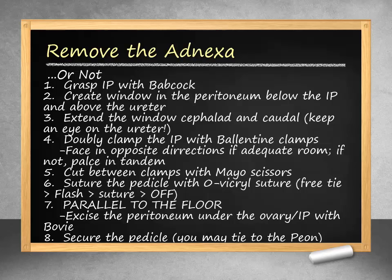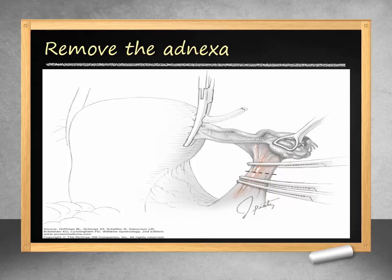Ballantyne clamps are then used to doubly clamp the IP through the window. Two Ballantyne clamps will be placed proximal to the IP with one clamp facing in the opposite direction close to the uterus. Mayo scissors are then used to cut between the clamps. The IP pedicle is then suture ligated, first with a free tie, followed by removal of the back clamp with flashing of the remaining clamp. Suture ligation is then performed with a transfixion suture and the clamp is removed while tying and securing the suture. We now have a freed IP. The peritoneum below the IP and ovary is then excised parallel to the floor with electrosurgery. This is performed on both sides if possible and needed. This graphic depicts proper removal of the adnexa.